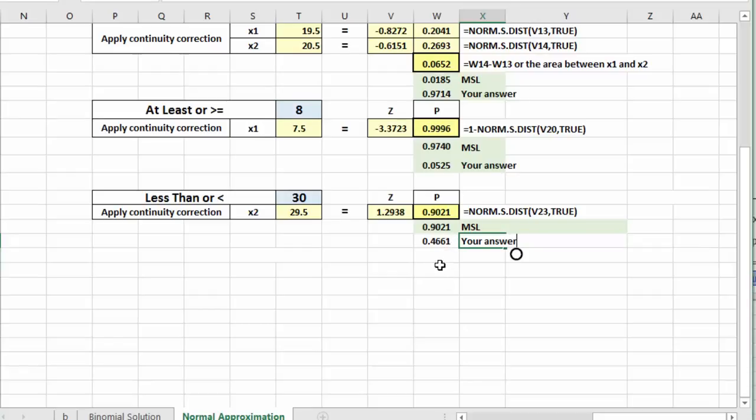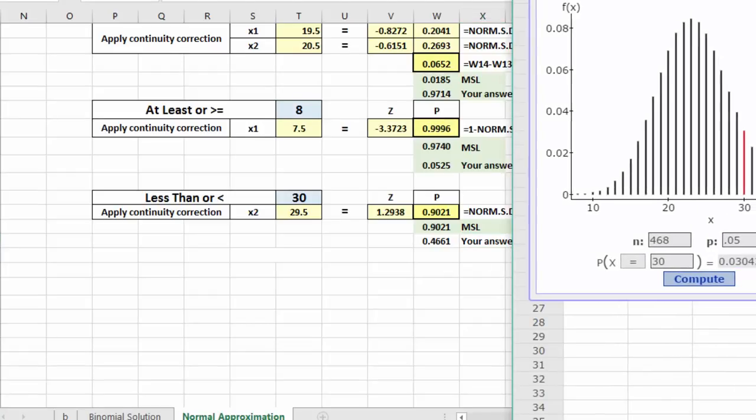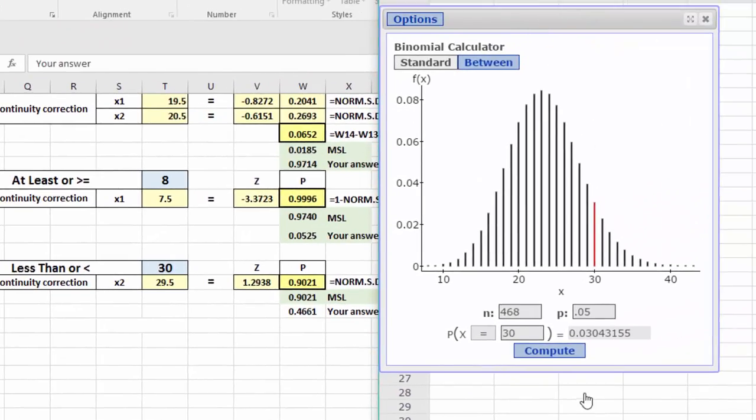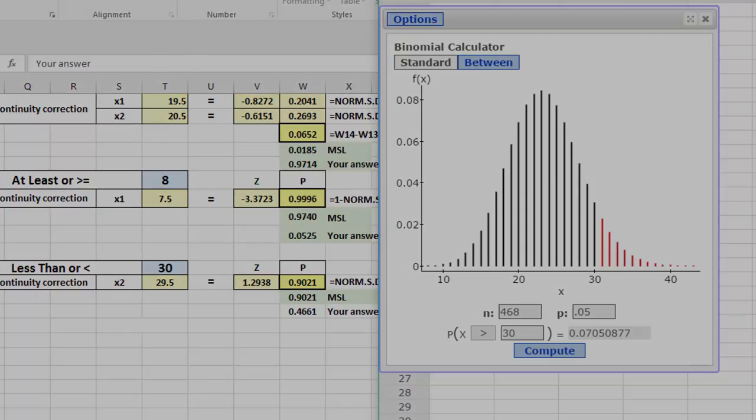You had 0.4661. I looked at StatCrunch, the binomial, and tried a number of different things to try to figure out how you got 0.4661, so I don't think you were using the binomial on this one unless you made a mistake. But the answer is 0.9021, so I hope this helps a bit.